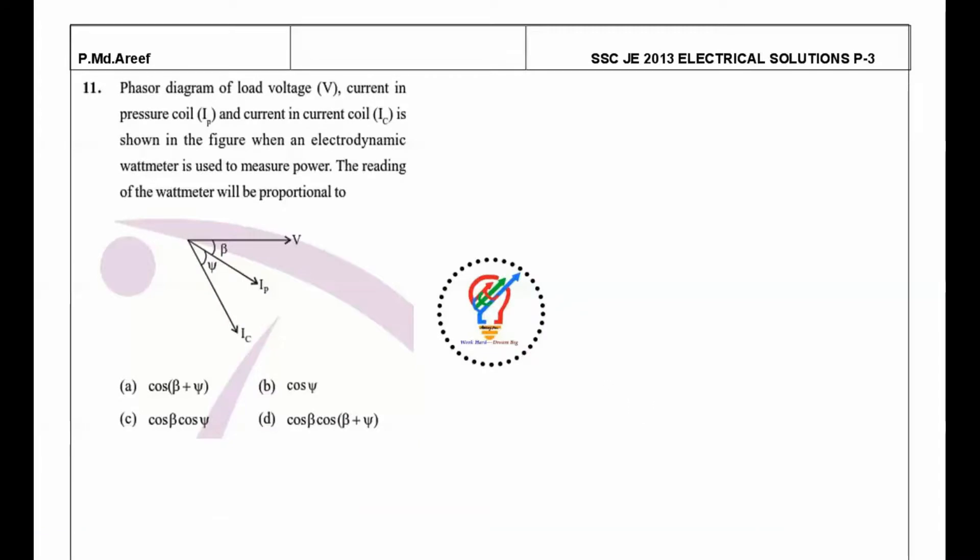Hello friends, welcome to my YouTube channel. In this session we will continue our discussion on the SSC JE 2013 Electrical Part 3. The question is: the phasor diagram of a voltage V, current in pressure coil, and current coil is shown in the figure when the electrodynamometer wattmeter is used to